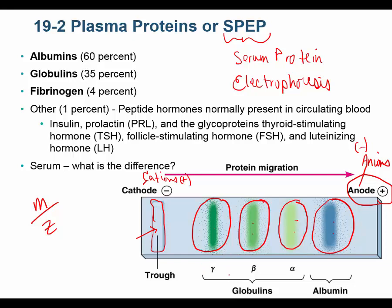In the lab, we know which proteins run in each band. A particularly large alpha globulin band might indicate high transferrin. A large gamma globulin band might indicate high immunoglobulins, or antibodies. Multiple sclerosis is diagnosed by oligoclonal banding patterns in the gamma band — a few extra lines visible in the gel that are diagnostic of MS.